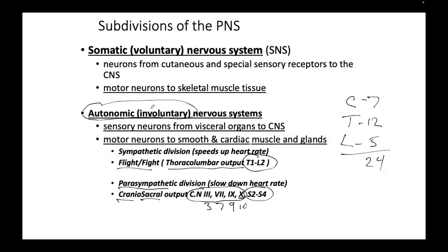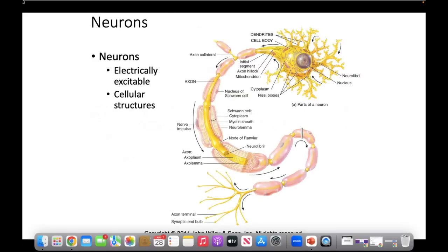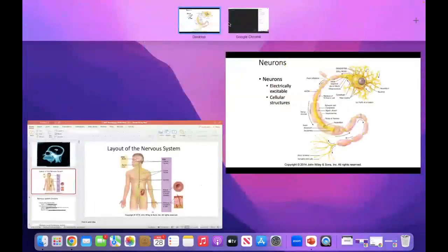Autonomic, remember, is involuntary. The somatic neural system going to your skeletal muscles is voluntary. We'll take a break here and see if there are any questions. When we come back, we'll get into the neuron.